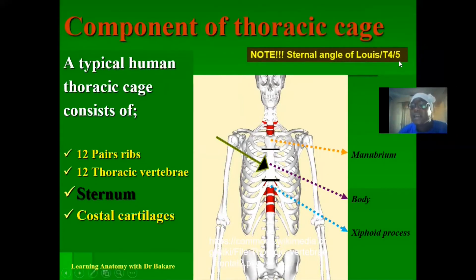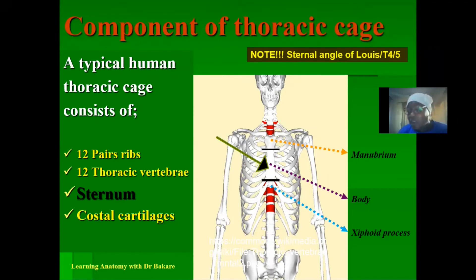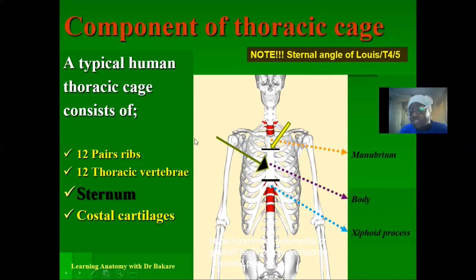We also have the sternal angle of Lewis, which corresponds to the level of the T4-T5 thoracic vertebra. This angle is created between the manubrium and the body of the sternum — at the manubriosternal joint connecting the manubrium with the body. This joint is of great clinical importance because a number of clinical events occur here, such as the aortic arch, the bifurcation of the trachea, the second costal cartilage, and also the second rib.